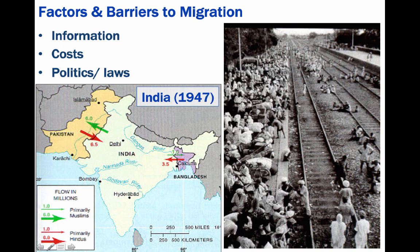As you can see with the image on the right, the train station in Amritsar, India, is crowded with Hindus from Pakistan.